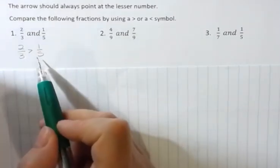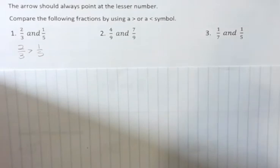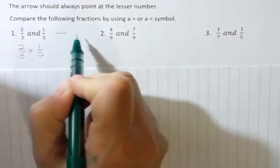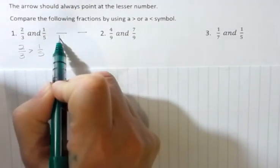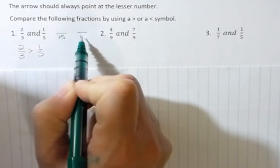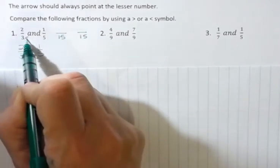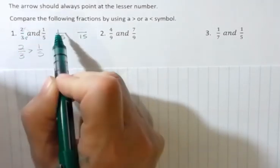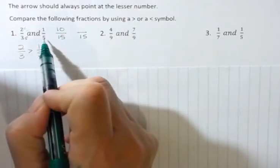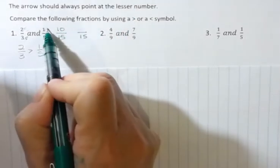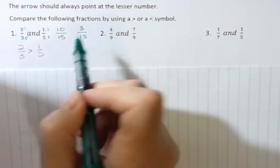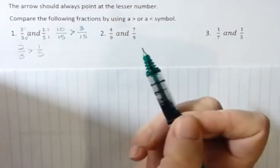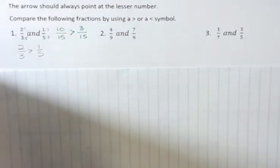It's pointing to the lesser value. But also, another way I could do that is to rewrite these with a common denominator. The common denominator would be fifteen, and then I would say three times five is fifteen, so two times five is ten, and five times three is fifteen, so one times three is three, and you can see that ten-fifteenths would be greater than three-fifteenths. So you could look at it either way.